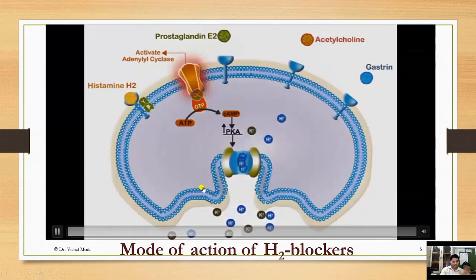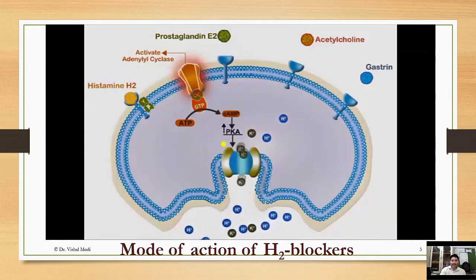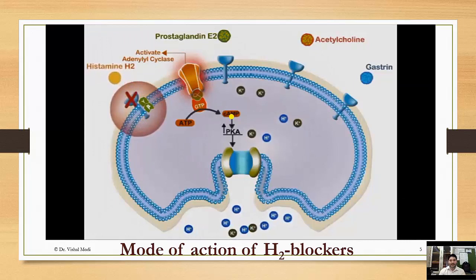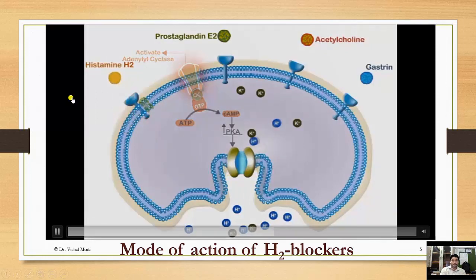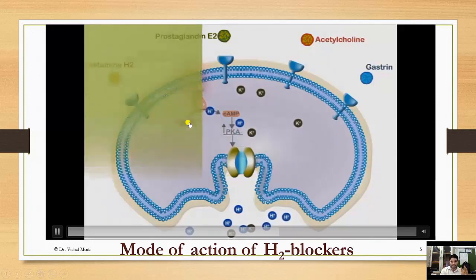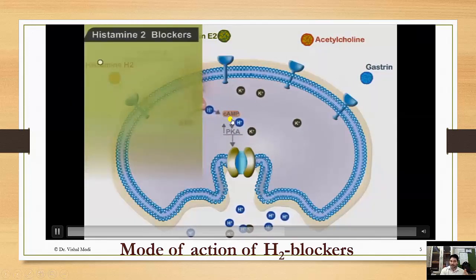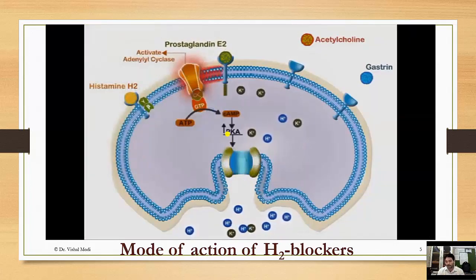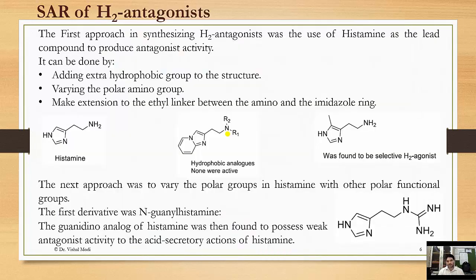Histamine activates cyclic AMP; the increased cyclic AMP level activates protein kinase A, which activates the H+/K+ ATPase pump, involving the exchange of H+ and K+. H2 histamine blockers block this process, decreasing the level of cyclic AMP, decreasing protein kinase A, and causing inhibition of the H+/K+ ATPase pump, ultimately producing the anti-secretory action.